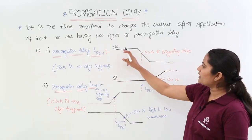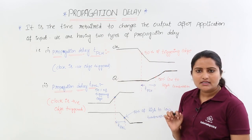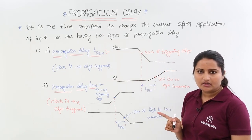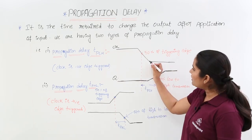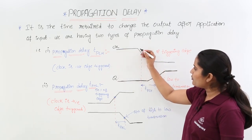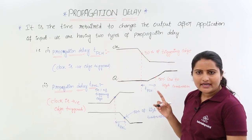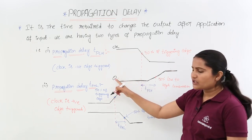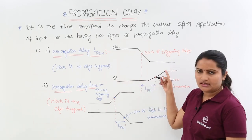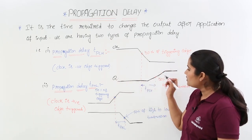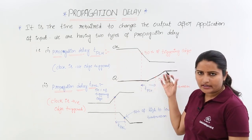Here you can observe a clock. This is called a negative edge triggered clock. In a negative edge triggered clock, whenever the negative edge comes — for example, the clock is positive and then falls — when the negative edge comes, your response Q, considered as output, is going to change. For example, my output is changed from one state to another.